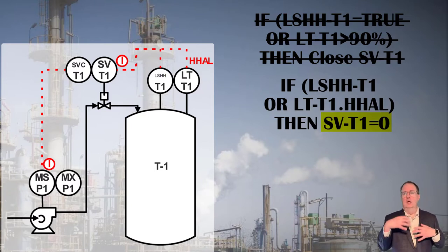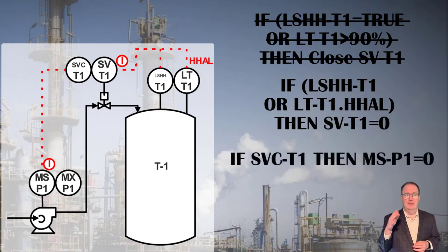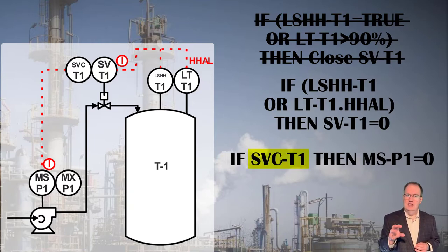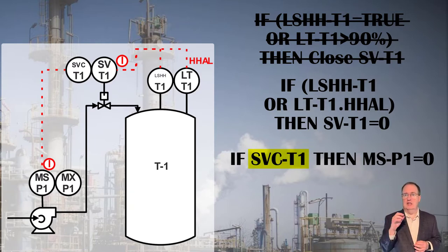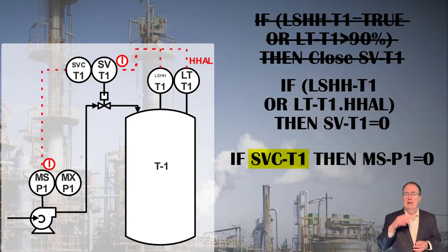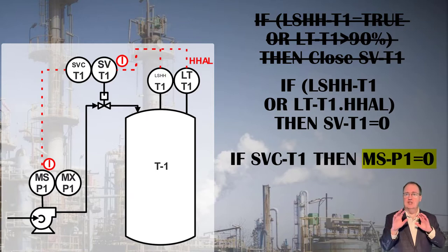Setting SVT1 to 0 is equivalent to telling it to close, because 0 represents closed and off, and 1 represents open or on. The second constraint that turns off the pump if the valve is closed is written as follows. SVC-T1 is a contact sensor — true or false — which detects if SVT1 is closed. It is true if the valve is closed, false if not closed. MSP1 is the motor starter, which interprets a 0 as a command to stop the pump.